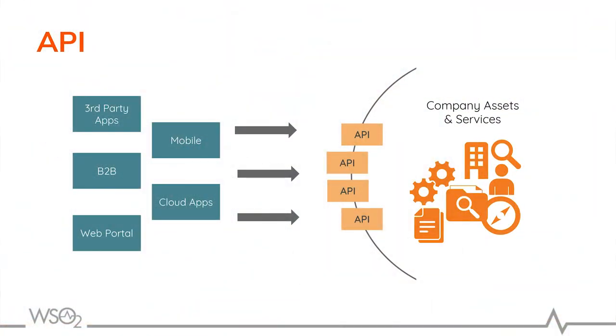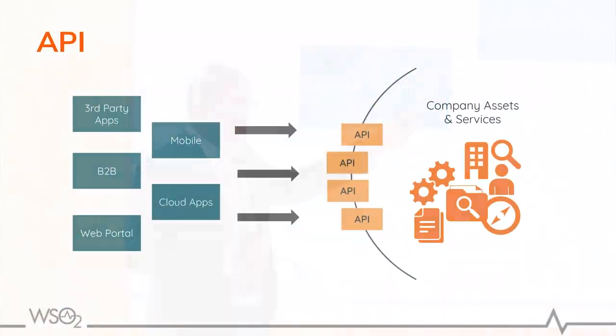API is one of the key technologies that drives a platform business. For those not familiar with the concept of an API: you would have your company assets and services within your organization, and you need a way of exposing these assets and services to different types of consumers — internal consumers or external consumers. An API acts as a bridge, exposing those internal assets to different types of applications, cloud applications, web portals, and B2B consumers that want to consume your internal assets and services.